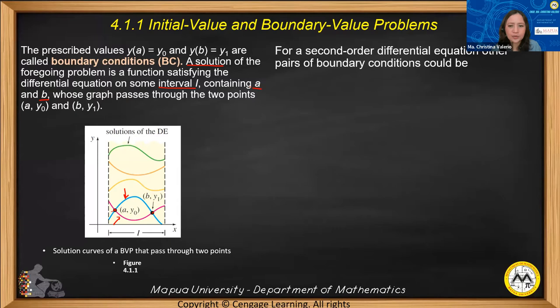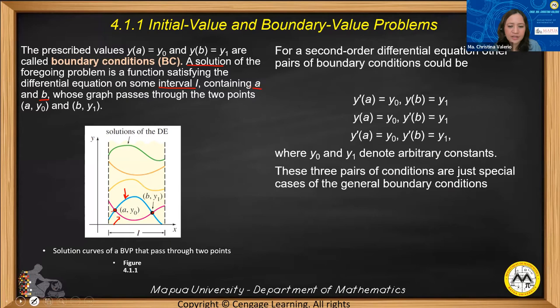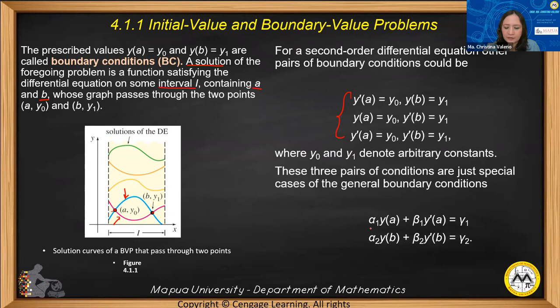For a second-order differential equation, other pairs of boundary conditions could be: y'(a) = y_0 and y(b) = y_1; or y(a) = y_0 and y'(b) = y_1; or y'(a) = y_0 and y'(b) = y_1, where y_0 and y_1 denote arbitrary constants. These three pairs are special cases of the general boundary conditions: alpha_1·y(a) + beta_1·y'(a) = gamma_1, and alpha_2·y(b) + beta_2·y'(b) = gamma_2.